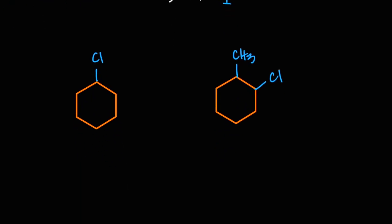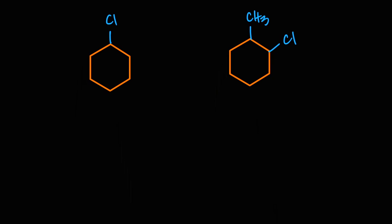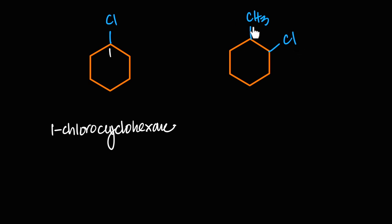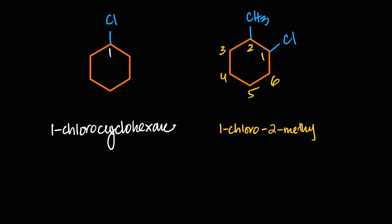Finally, cyclic haloalkanes: a six-carbon ring with one chlorine is simply 1-chlorocyclohexane, since the chlorine-bearing carbon is numbered one. For a ring with both chlorine and a methyl group: since the numbers are tied at 1,2 either way, use alphabetical order — chlorine (C) before methyl (M) — so chlorine gets carbon one. The name is 1-chloro-2-methylcyclohexane.